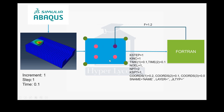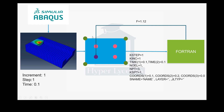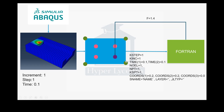Based on the code we developed, it returns an answer to that integration point. Then Abacus sends new data for the second integration point, and the code returns the result for the second integration point, then the third, and finally the fourth. You can see Fortran returning the answer after finishing the first element's first integration point.